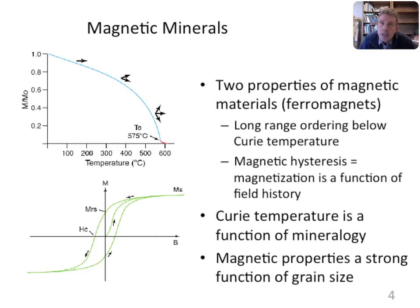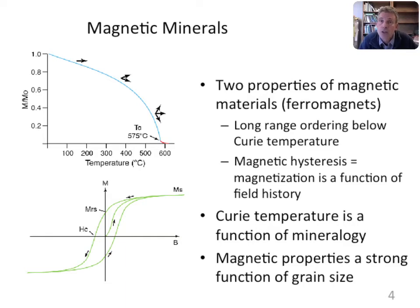Now a little about the physics of the magnetization process. The top diagram shows the magnetization of a magnetic material as a function of temperature — the blue line — reflecting long-range ordering that occurs below the Curie temperature. This is one of two properties of ferromagnetic materials.